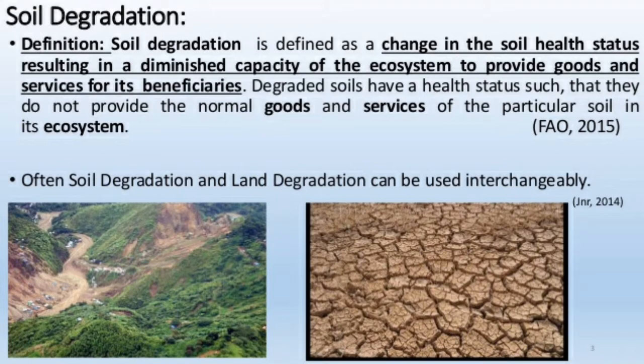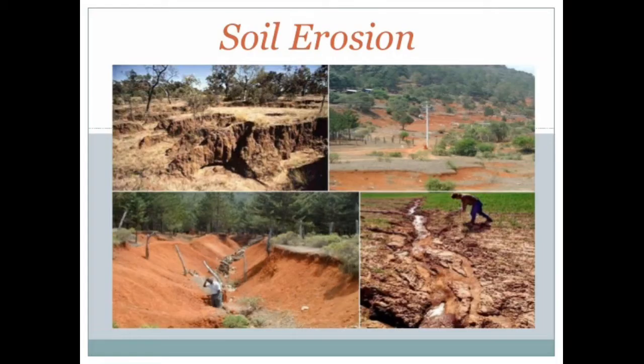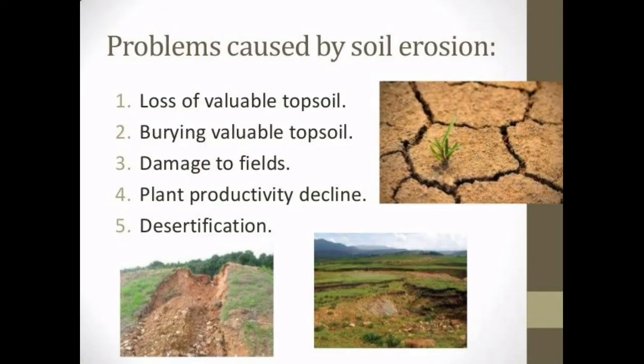Soil degradation is defined as a change in the soil health status resulting in a diminished capacity of the ecosystem to provide goods and services for its beneficiaries. Soil erosion is the wearing away of the upper part of the soil. It sometimes happens when bare soil is left exposed on the ground.